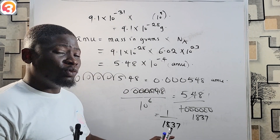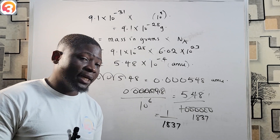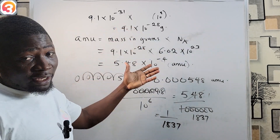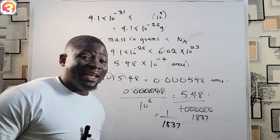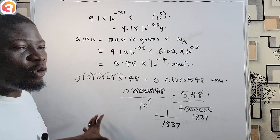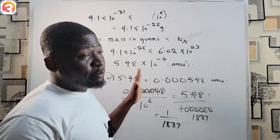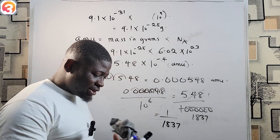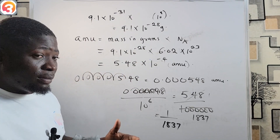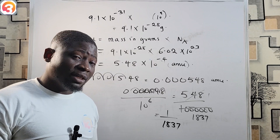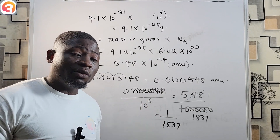This value — 1/1837 — is widely regarded as the mass of an electron. You can memorize all the intermediate values, but the key simplified answer is 1/1837 as the mass of an electron. This is a past question topic, so please do not take anything we have done lightly. Understand how we arrived here: from the specific charge, to Millikan's oil drop experiment for the charge, to finding the mass.